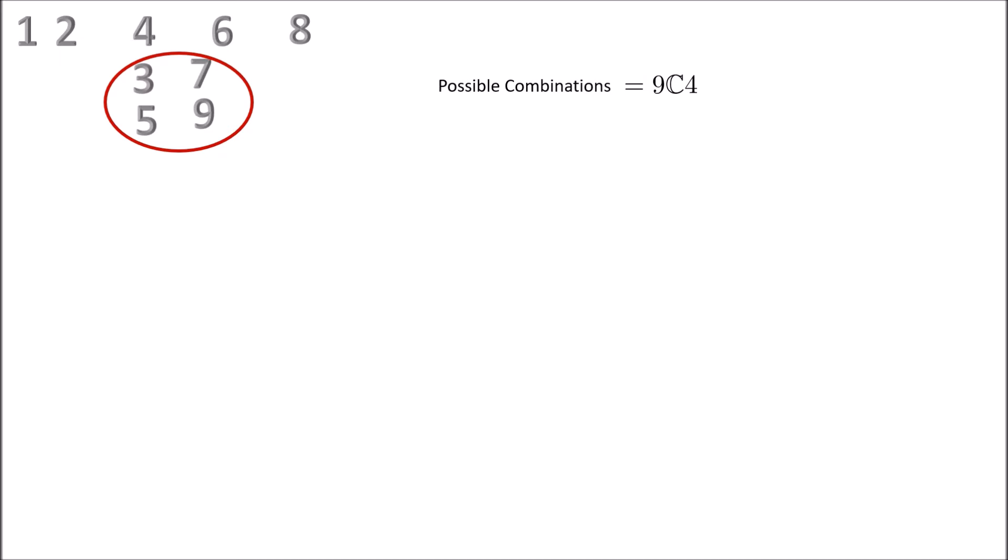For those of you who are unfamiliar with the C notation, nCr in general means n factorial divided by r factorial multiplied by n minus r factorial. Plugging into our case gives us a value of 126.